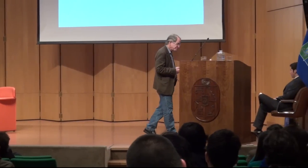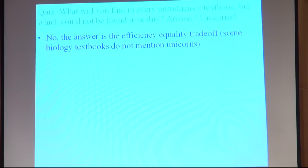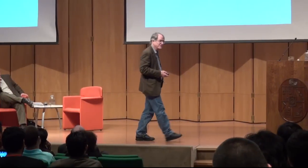Here's a quiz: what will you find in every introductory textbook but cannot be found in reality? Not unicorns — the answer is the efficiency-equality trade-off. You'll find it even in a textbook by Joe Stiglitz, who changed the way we think about economics. It's more or less something every economist must swear to — like a religious symbol. However, even in the 1980s there were early warning signs that this particular unicorn did not exist.